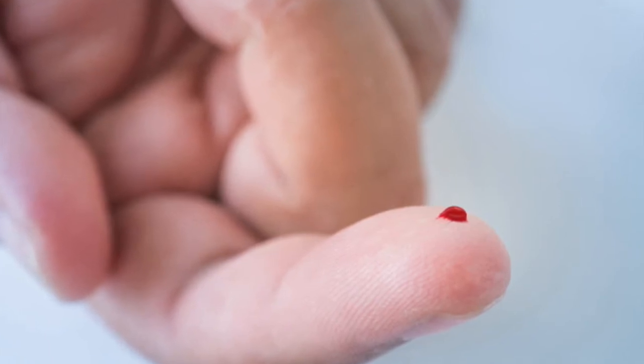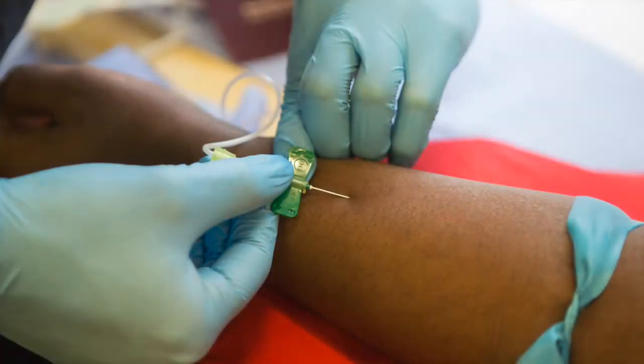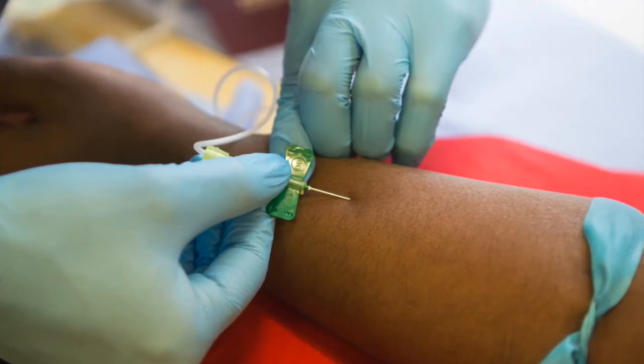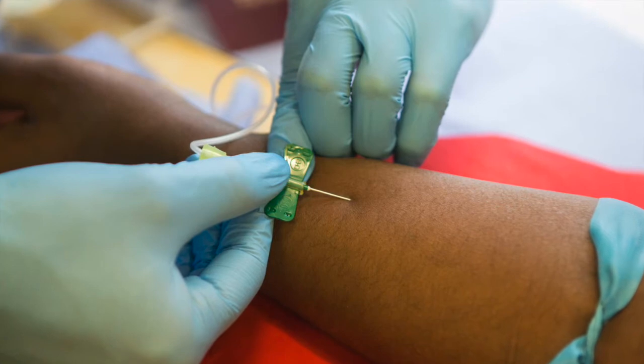And believe it or not, even if you have a peripheral IV in one arm and we have access to your vein, to get a blood sugar or a blood draw, we still have to stick you again, causing more pain and more risk for infection.